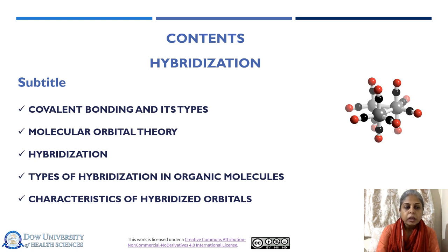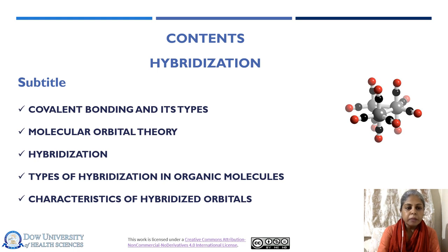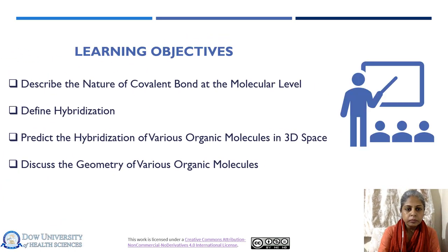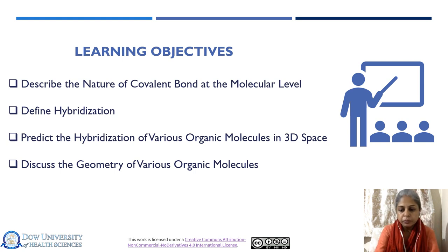These are the five major topics we will be covering in today's lecture. We will start by describing what a covalent bond is and how many different types are found in organic molecules. Secondly, we will look at molecular orbital theory. After covering these two basic concepts, we will explain hybridization, then the types of hybridization found in organic molecules, and the characteristics of hybrid orbitals. Our learning objectives are: describe the nature of a covalent bond at the molecular level, define hybridization, predict the hybridization of various organic molecules in three-dimensional space, and discuss the geometry of various organic molecules.